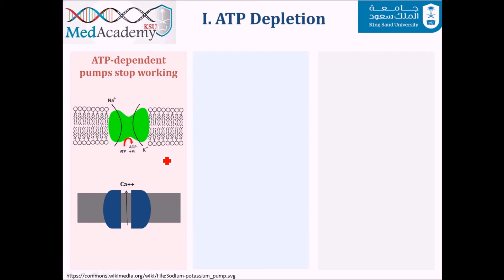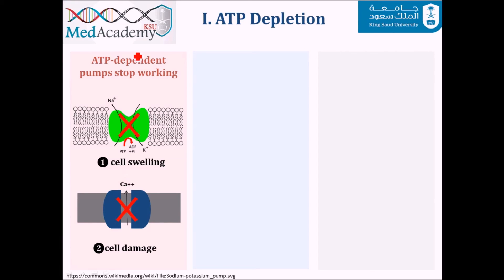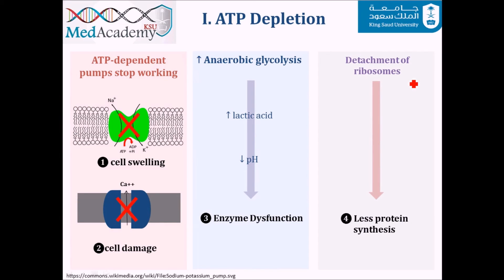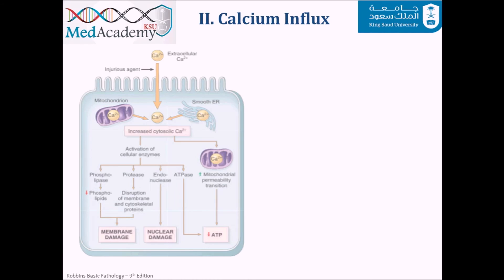Second, with oxygen deficiency the cell shifts to anaerobic glycolysis, increasing lactic acid, dropping pH, and causing enzyme dysfunction. Third, there is detachment of ribosomes from the rough endoplasmic reticulum, reducing protein synthesis. These are the net results of ATP depletion.